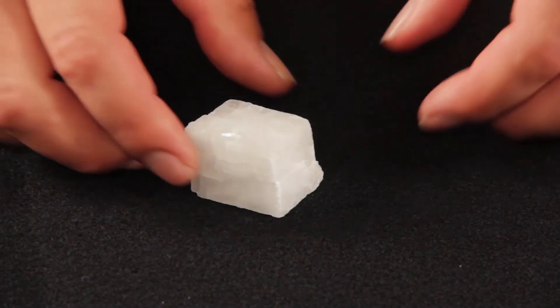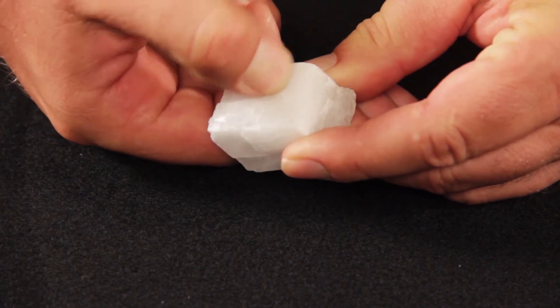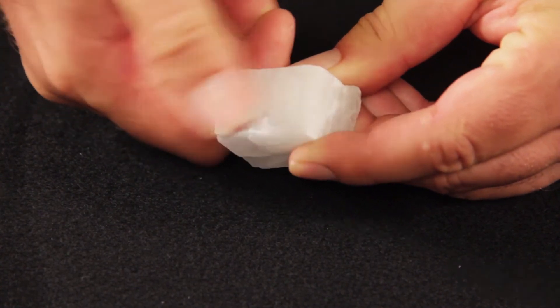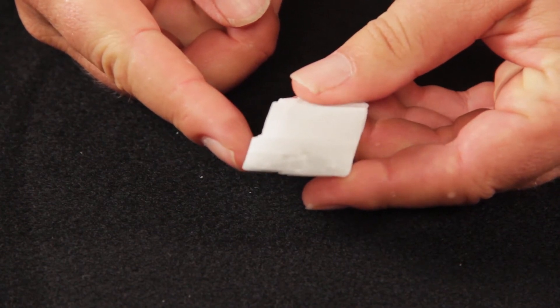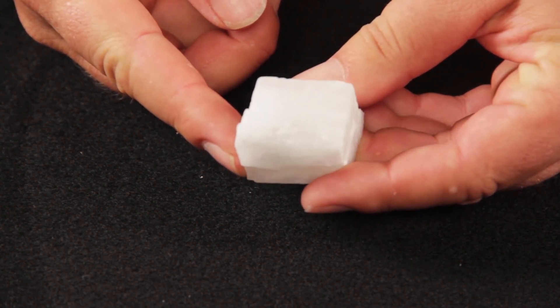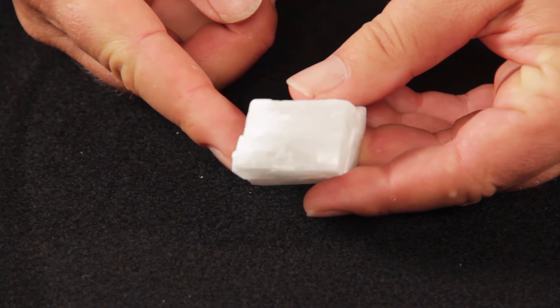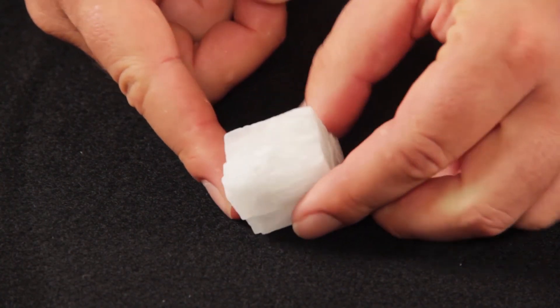When we attempt to scratch the calcite crystal with a fingernail, which has a hardness of 2.5, we find that the fingernail does not scratch it. This would indicate that calcite's hardness is above 2.5. So overall, we can place the hardness of calcite somewhere between 5.5 and 2.5.